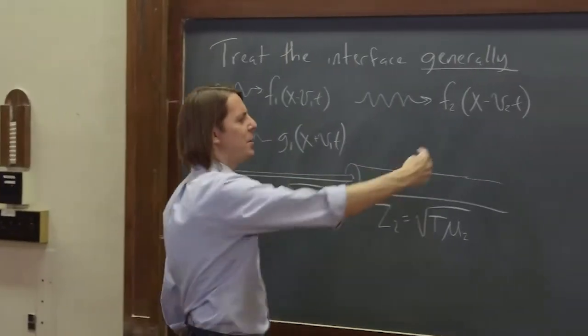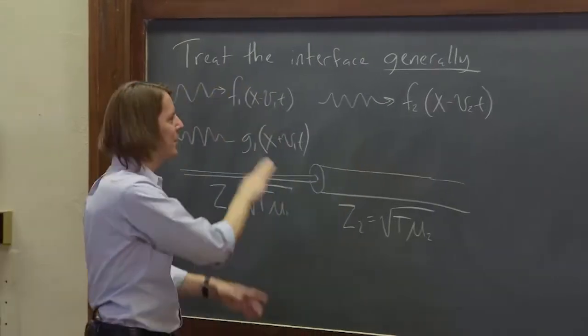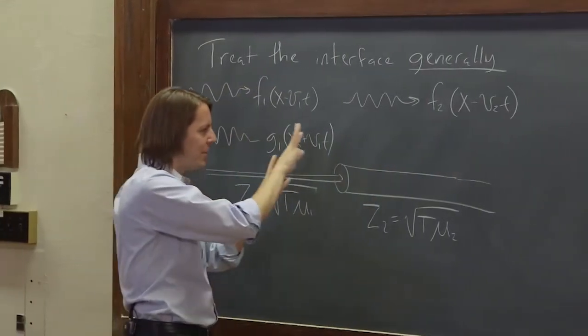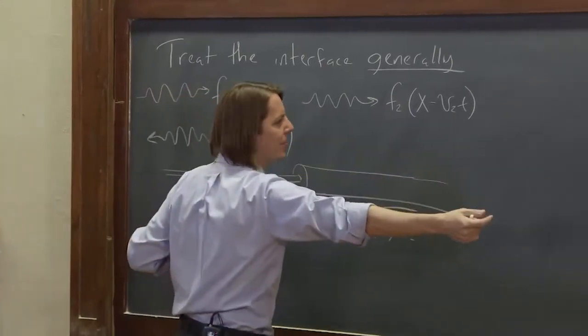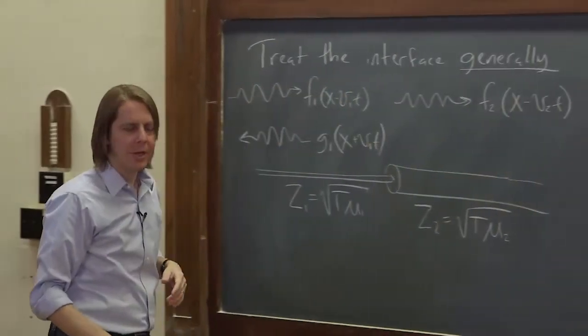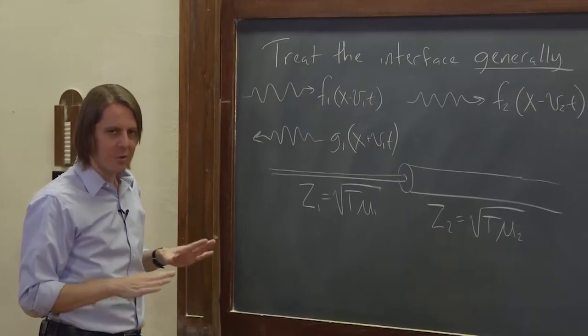And we're not going to think about one coming this way, because that wouldn't happen, right? So the disturbance of energy comes here, it hits the interface, and some of it can go forward, some of it can come backwards. Nothing comes from the edge of the universe at us this way. So that's the three functions we're going to think about.